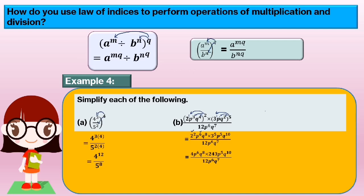Gathering all the numbers at the front and simplifying: 4 times 243 divided by 12. Then for p, we add the indices when multiplying, so p to the power of 6 plus 5 minus 6. And for q, q to the power of 8 plus 10 minus 7. When we calculate, we get 81 times p to the power of 5 times q to the power of 11.